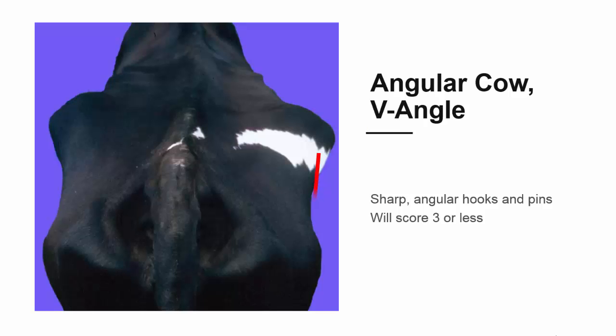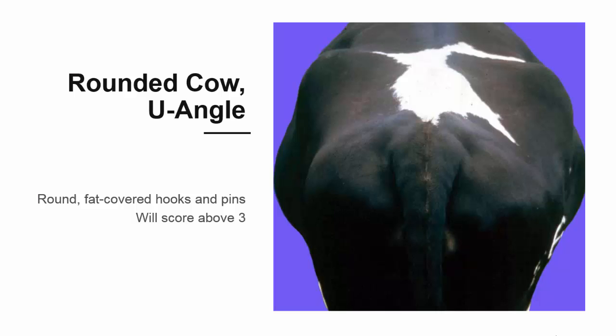This cow has a V angle between the hooks and pins and the bones are clearly sharp and angular. This kind of cow will score 3 or less. This cow has a U angle between the hooks and pins and the bones are smooth and round, clearly covered in fat. This cow will score above 3.